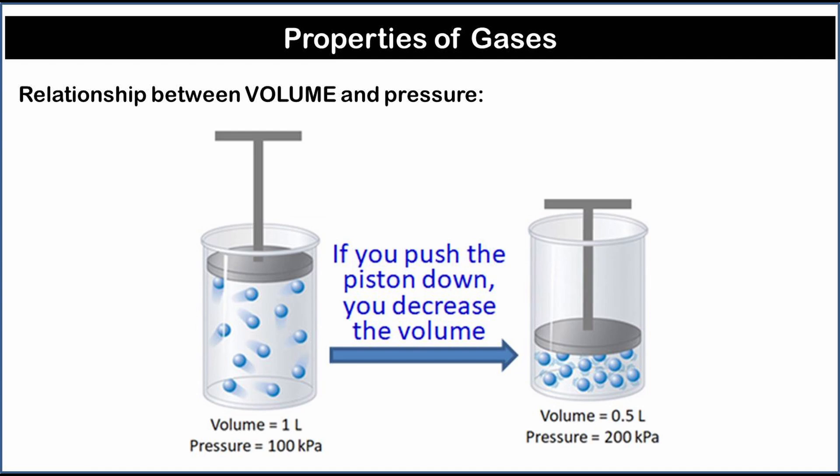What is the relationship between volume and pressure? The particles of gas in the cylinder container are moving. Those particles colliding with the walls of the container create pressure. If you push the piston down, you decrease the volume. The same number of particles crowd into a smaller space. So the gas particles collide with the walls more often, so the pressure increases.